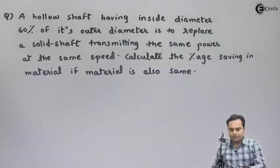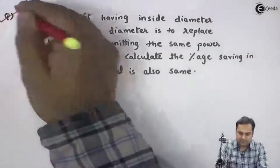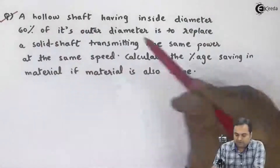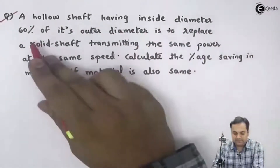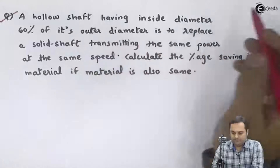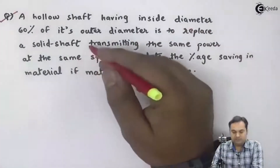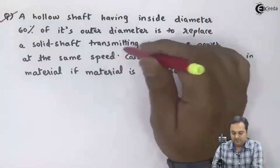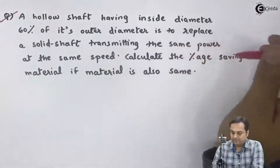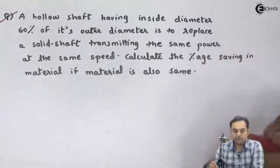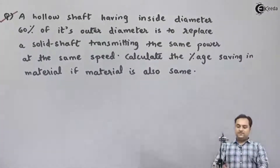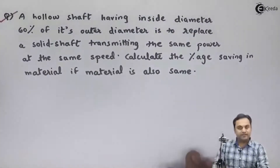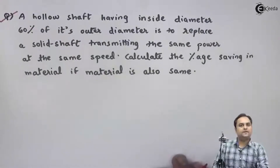Let us take the next question on torsion. A hollow shaft having inside diameter 60 percent of its outer diameter is to replace a solid shaft transmitting the same power at the same speed. Calculate the percentage saving in material if the material is also the same. Reading into this question, it is very clear that this is a concept-based question.